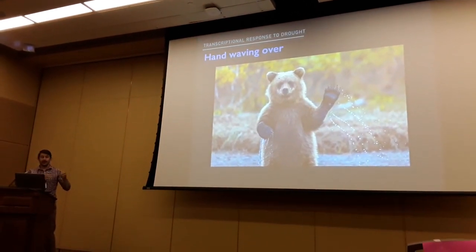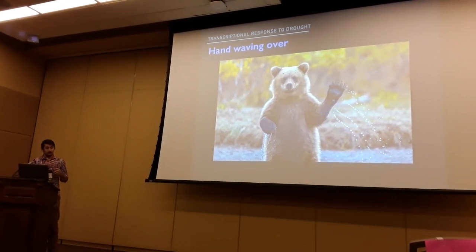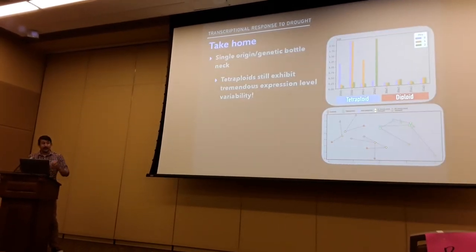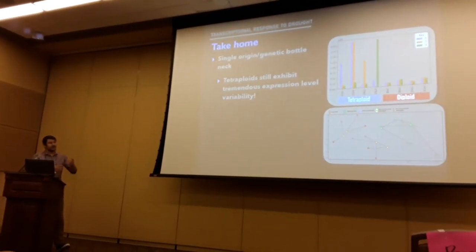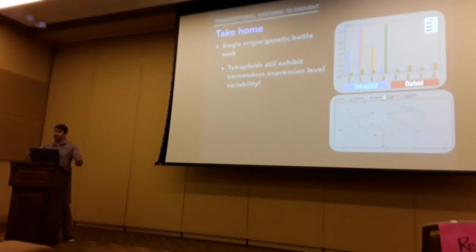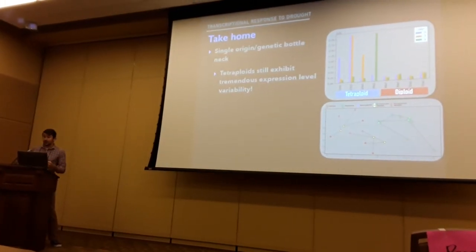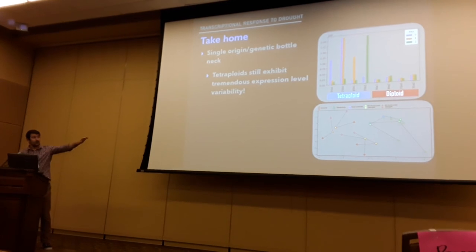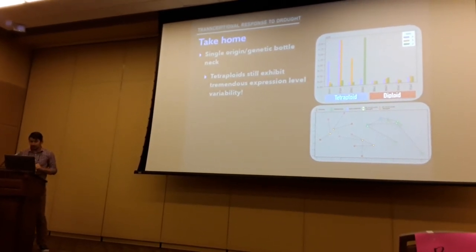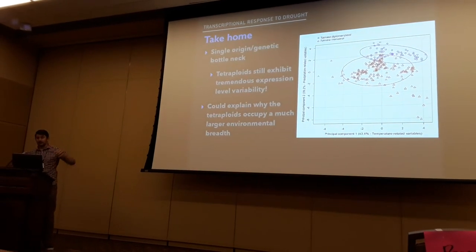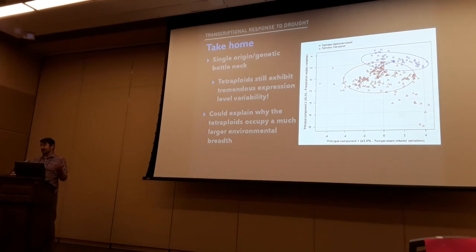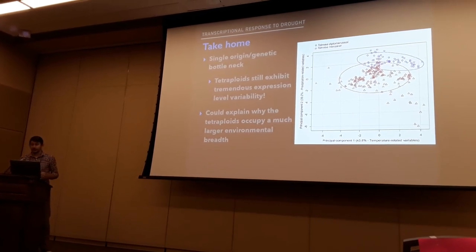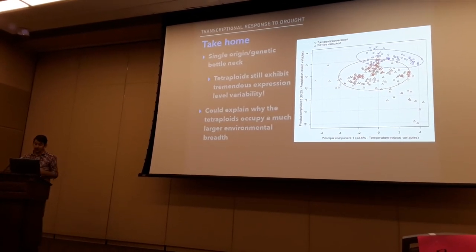Despite a single origin or genetic bottleneck of the tetraploid being formed, it's still exhibiting tremendously more expression-level variability than the diploid. That could be one explanation why tetraploids tend to inhabit a larger environmental breadth despite having lower genetic diversity — something seen in many but not all polyploid systems. This variability in transcriptome size could be one mechanism for having more phenotypic variability.